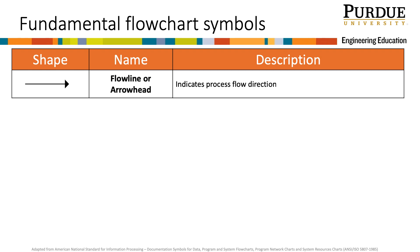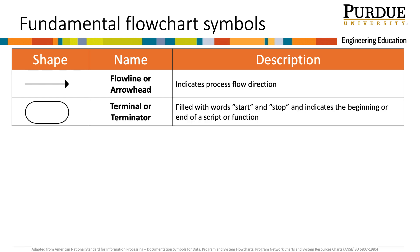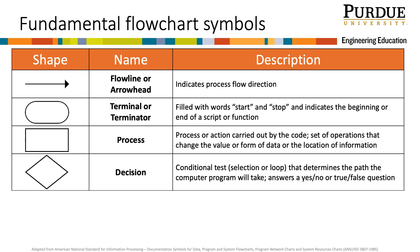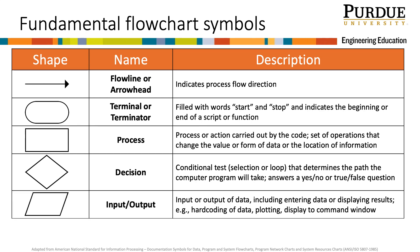Actions represented in flowcharts are connected with flowlines. These indicate the direction of the flow of the process. Each program begins and ends with a terminal symbol indicating the start and stop of the program. This symbol is an oval. The rectangle symbol in flowcharts indicates a process which is carried out by the code. Decision structures are marked with a diamond. These are conditional tests that determine the paths that a computer program will follow. A parallelogram is used to indicate that there is an input or output of data.